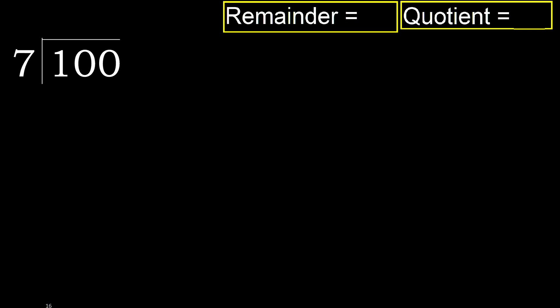100 divided by 7. 1 is less, therefore next. 10 is not less, therefore with 10. 7 multiplied by which number is nearest to 10,